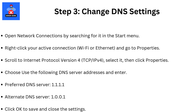Step 3: Change DNS settings. Open network connections by searching for it in the Start menu. Right-click your active connection — Wi-Fi or Ethernet — and go to Properties. Scroll to Internet Protocol Version 4, select it, then click Properties. Choose 'Use the following DNS server addresses' and enter: Preferred DNS server 1.1.1.1, Alternate DNS server 1.0.0.1. Click OK to save and close the settings.